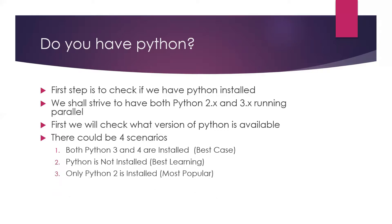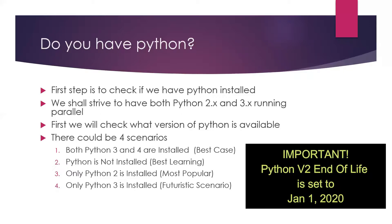Another popular scenario is that only Python 2 is installed. Python 2 being a very popular scripting language, many projects depend on it. It is highly likely that if you have only one Python version installed, it may be Python 2. A more futuristic scenario is that you have only Python 3 installed, which going forward will probably be the scenario for all of us as Python 2 reaches its end of life.